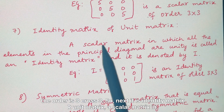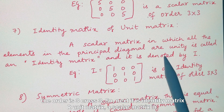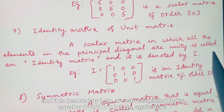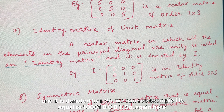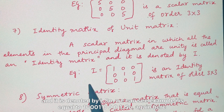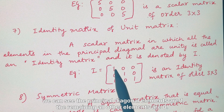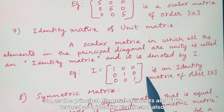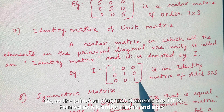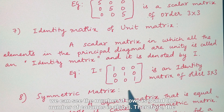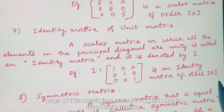The seventh type is an identity matrix, also called a unit matrix — a scalar matrix in which all the elements in the principal diagonal are 1 (unity) is called an identity matrix, denoted by I. For example, I = [1 0 0 / 0 1 0 / 0 0 1]. The principal diagonal elements are all 1 and the remaining elements are 0. The order is 3 cross 3.